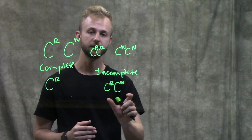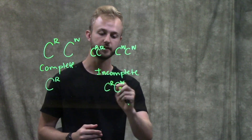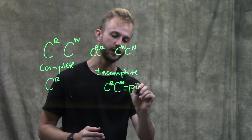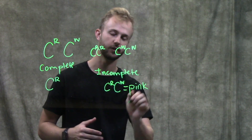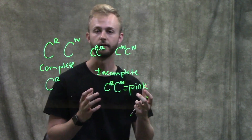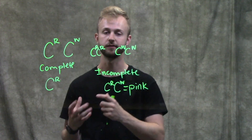In incomplete dominance, the phenotype of this individual would be pink. So they would have pink flowers when we mix red and white together.